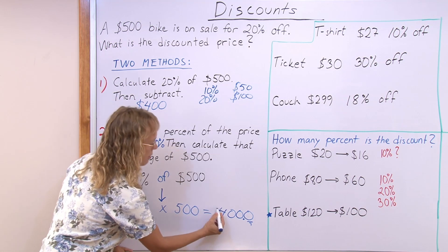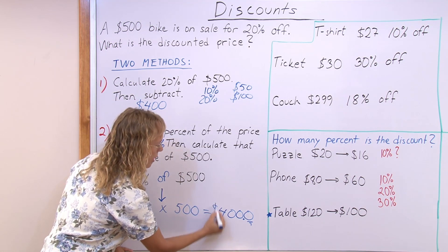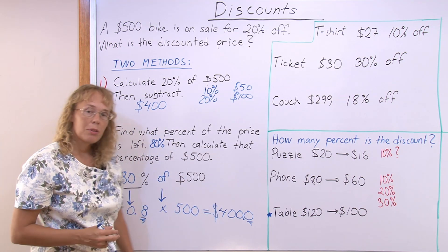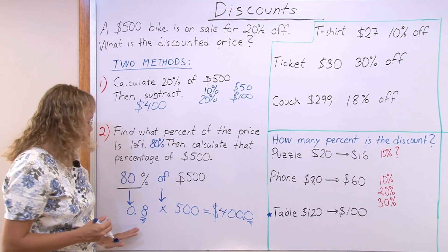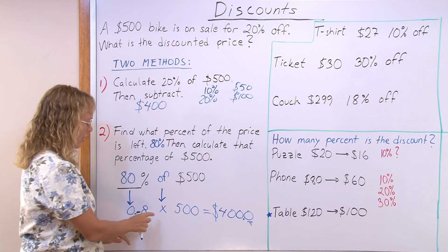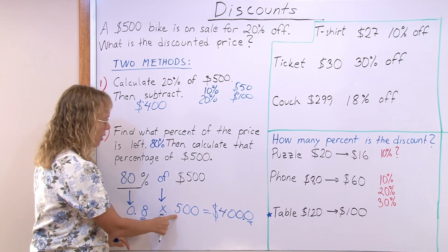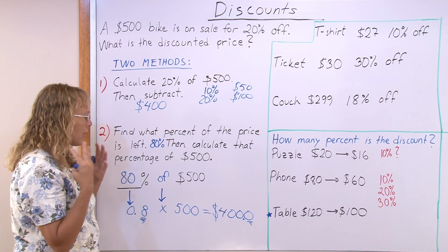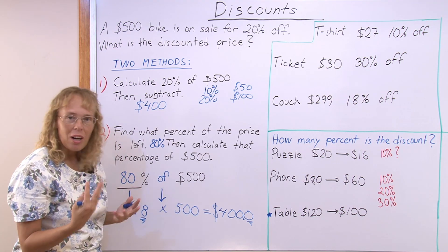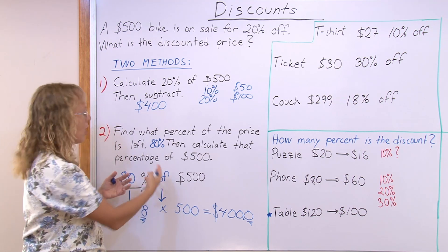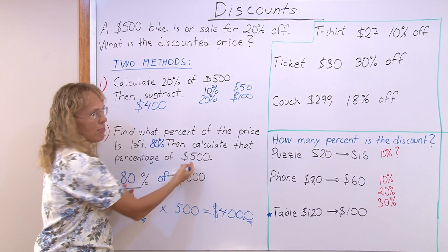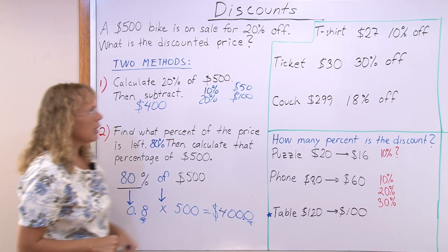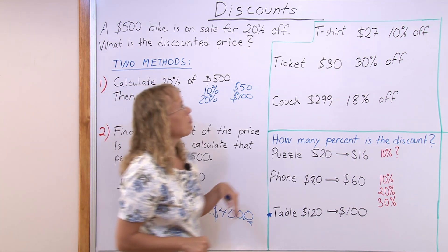So the answer is $400 again. And in practice, once you get used to this, you can basically go 8 times 5 is 40, and then think in your mind that it must be 400 — somewhat less than 500 — so it's $400.